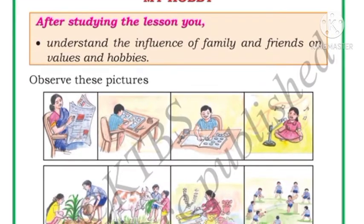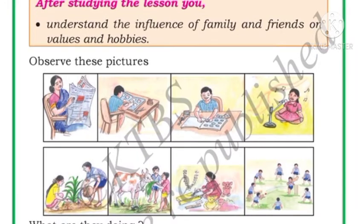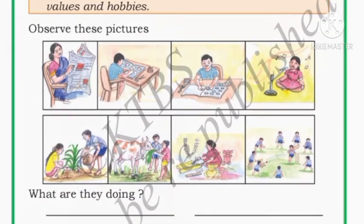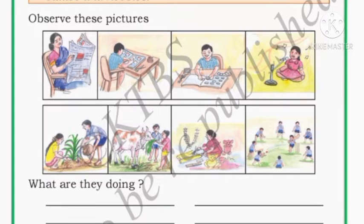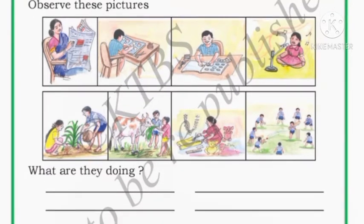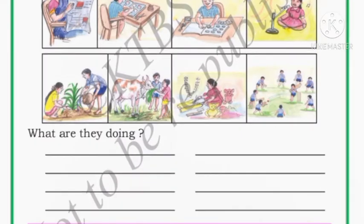Children, here some pictures are given — observe these pictures. See here: a woman is reading a newspaper, then a boy is collecting stamps, then in the third picture a boy is collecting coins, then singing.